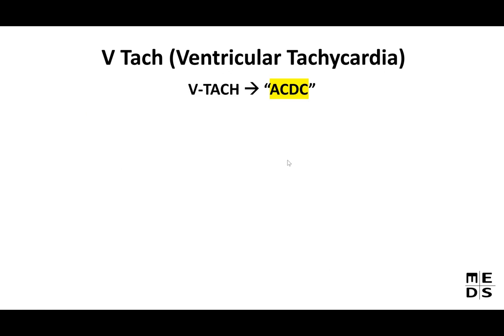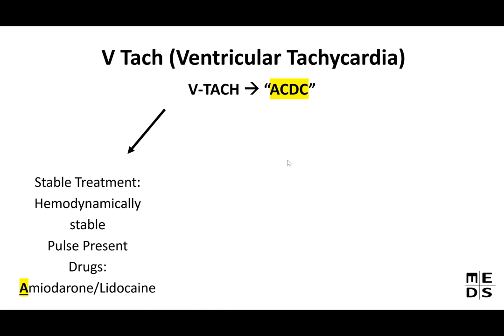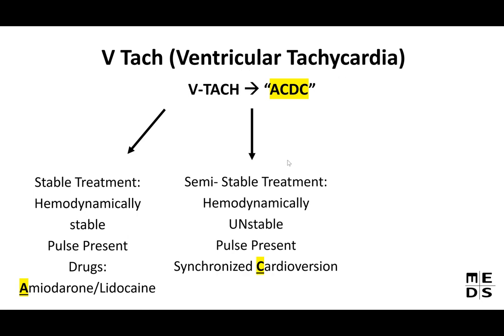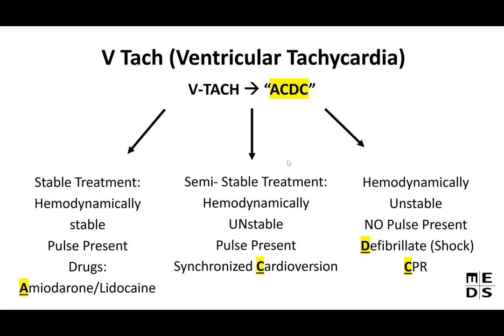To remember VTach treatment, use the mnemonic ACDC: A = Amiodarone/Lidocaine (stable, has pulse); C = synchronized Cardioversion (hemodynamically unstable, still has pulse); D = Defibrillate (no pulse, hemodynamically unstable); C = CPR. That's how you remember what to do for VTach — ACDC.